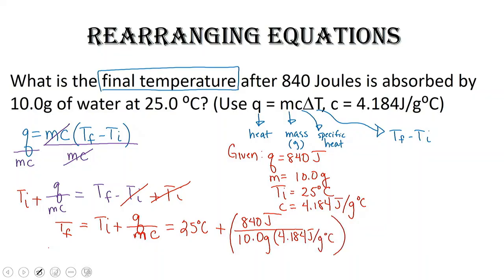Now, when you put this into your calculator, you are going to take this value, this number set here, and put it into your calculator: 840 joules divided by 10 divided by 4.184.